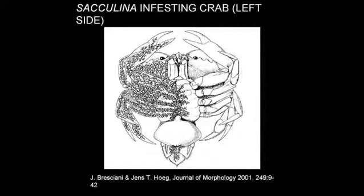This is just half of sacculina. It sends out all these roots through the crab's body. It castrates the crab. It basically controls its mind. The crab treats it like its own brood — it'll keep it clean, keep algae off of it. That is very cool.